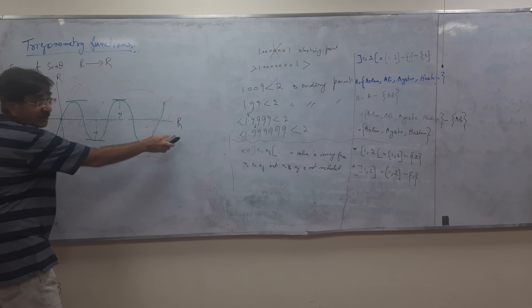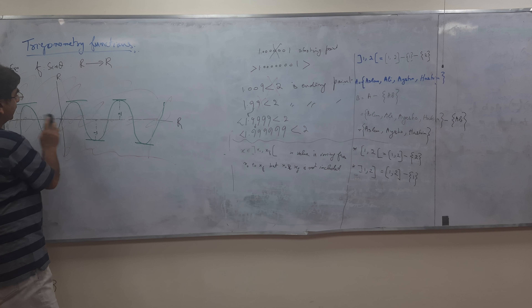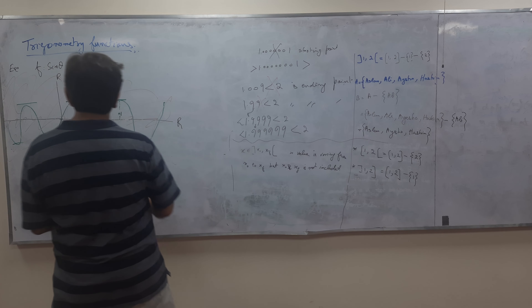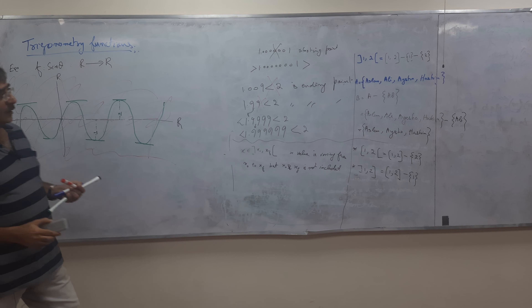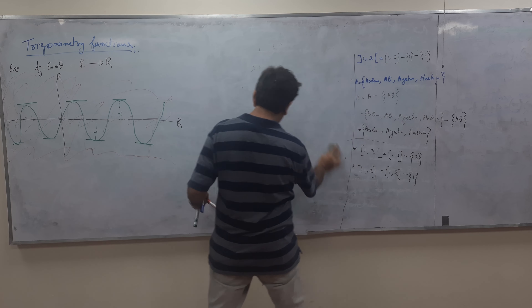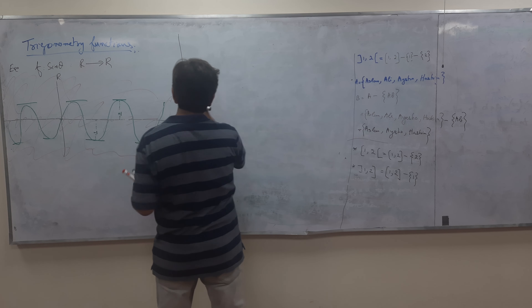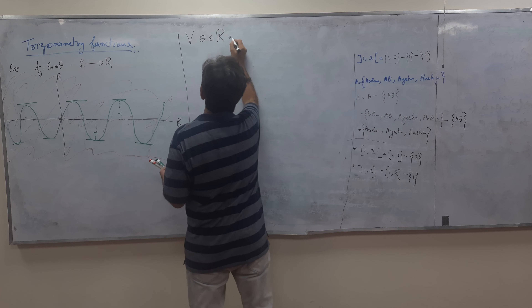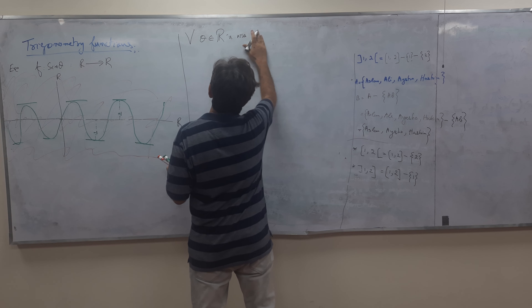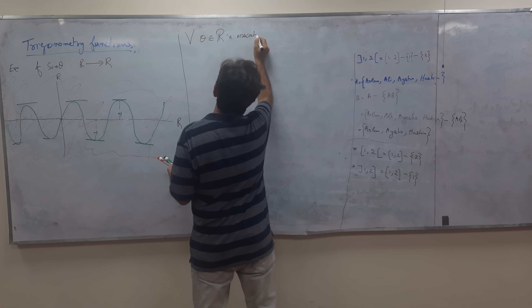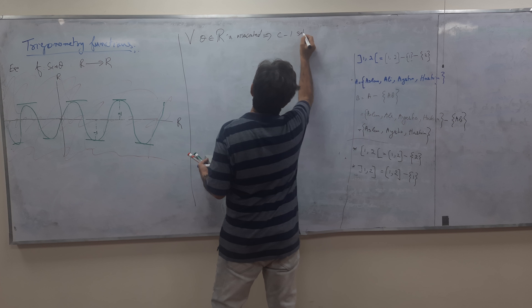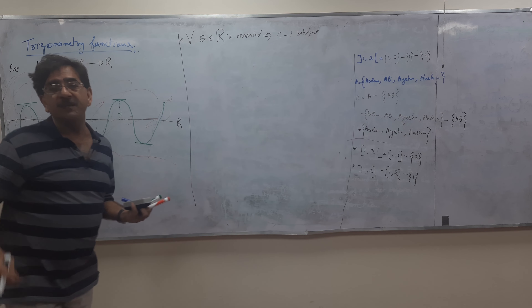Since all points are used, and R to R means both plus and minus are considered, all regions of R will be considered. In the domain, the entire R region including plus and minus is included. So all entire space is considered, meaning C1 is satisfied because all values are being used.